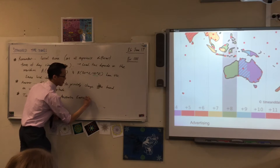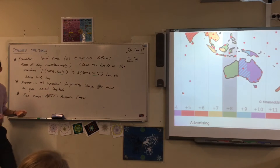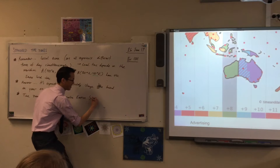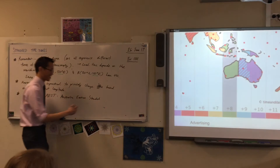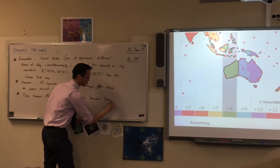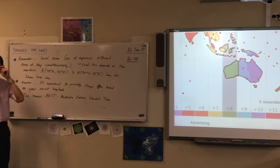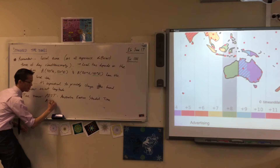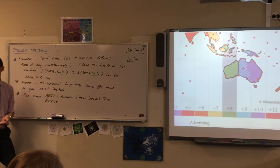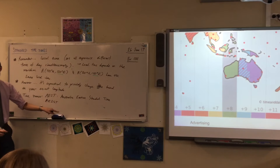Why is there an A in front? Why not just Eastern Standard Time? So there are many different Eastern time zones, so AEST. Sometimes we're not AEST — sometimes we're AEDST. What's that? Daylight Savings — Australian Eastern Daylight Savings Time.